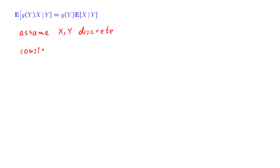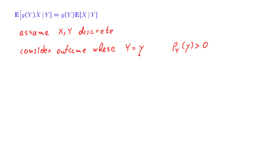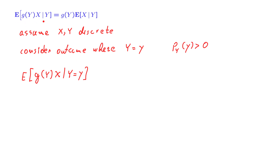So let us consider an outcome for which the random variable Y takes a specific value, little y. Of course, this has to be a specific little y that is possible; otherwise, conditioning on that event would not be meaningful. So if an outcome has this value for Y, then this random variable takes, by definition, the value — the expected value of g(Y, X) — the conditional expectation given that capital Y took on this value. This was our definition of the abstract conditional expectation as a random variable.